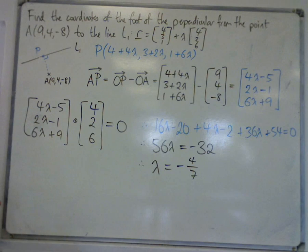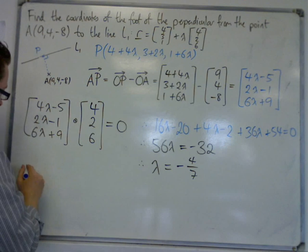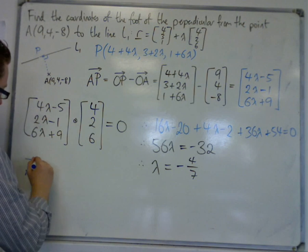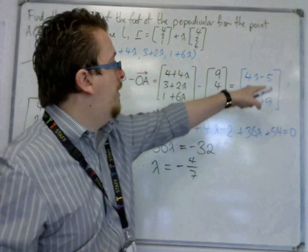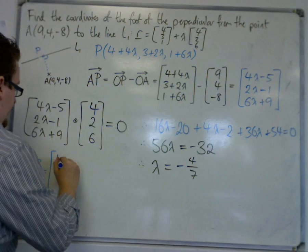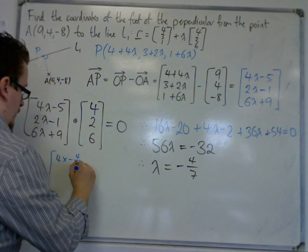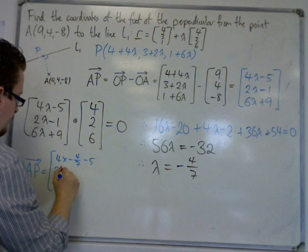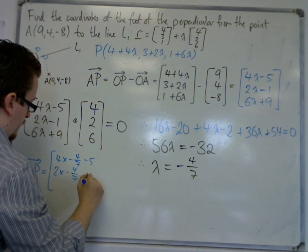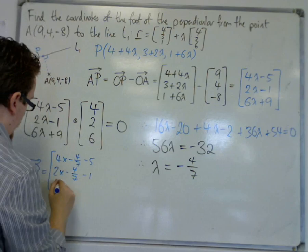So AP is equal to 4 times lambda minus 5, 2 lambda minus 1, and 6 lambda plus 9.